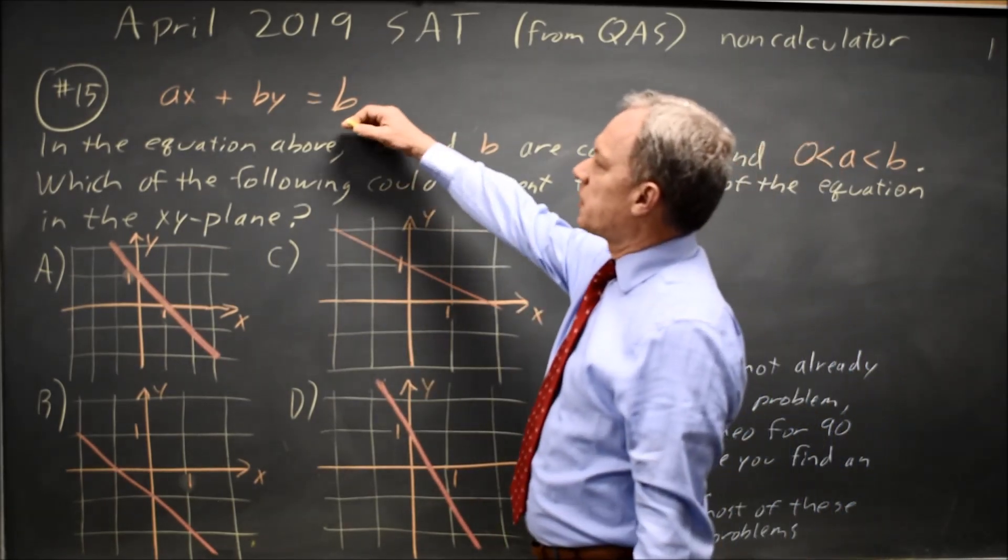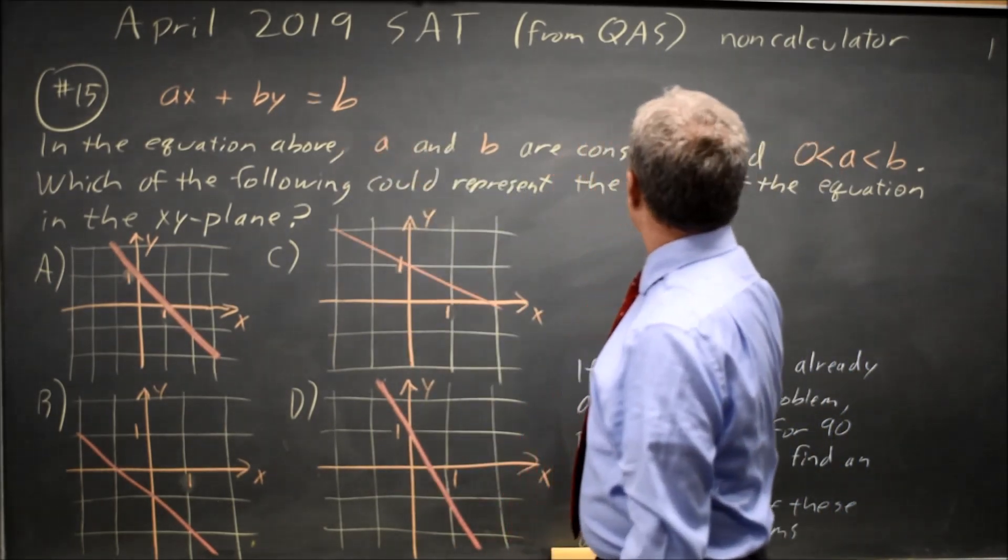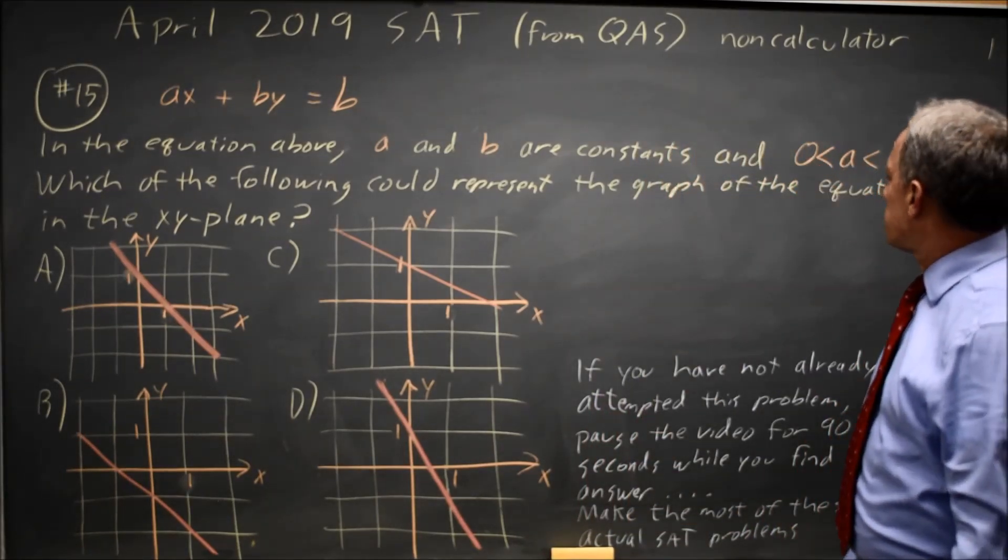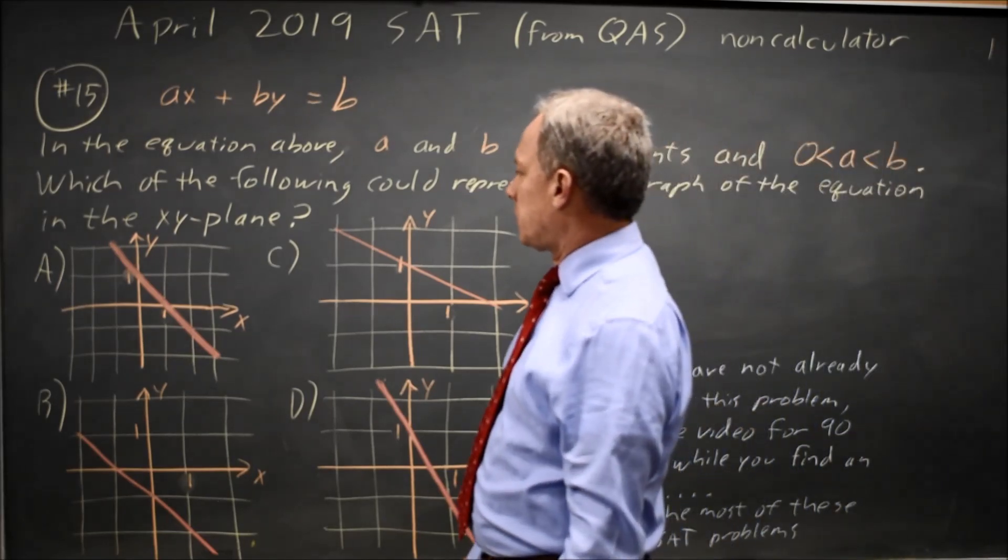College Board gives us an equation, ax plus by equals b. A and b are constants, with a and b both positive but a less than b. Which could be the graph of the equation in the xy plane?